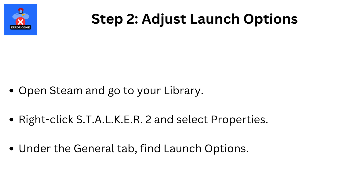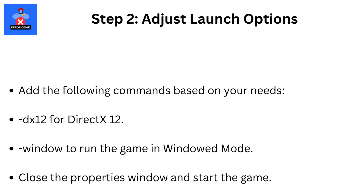Step 2: Adjust Launch Options. Open Steam and go to your library. Right-click STALKER 2 and select Properties. Under the General tab, find Launch Options. Add the following commands based on your needs: -dx12 for DirectX 12, or -window to run the game in windowed mode. Close the Properties window and start the game.